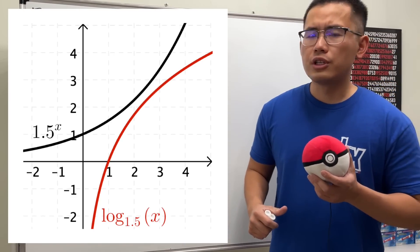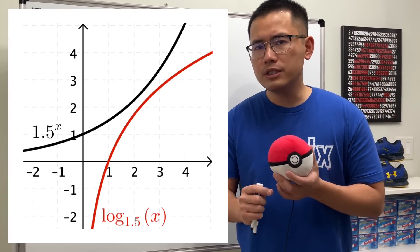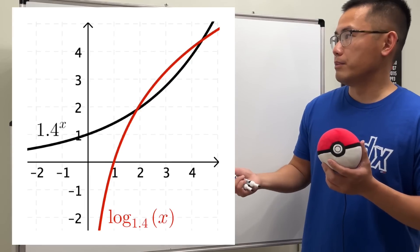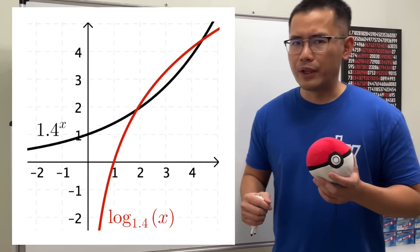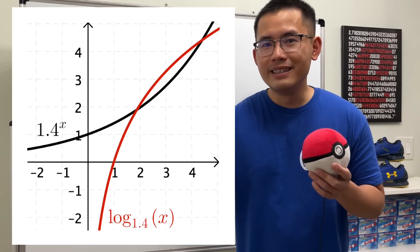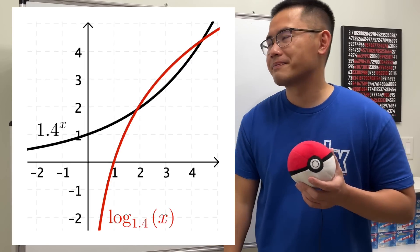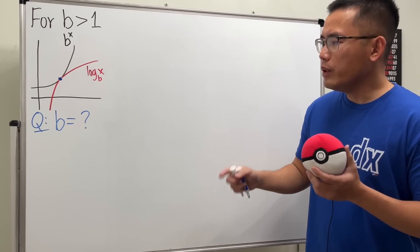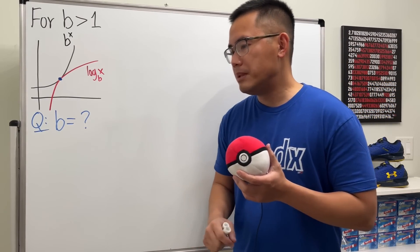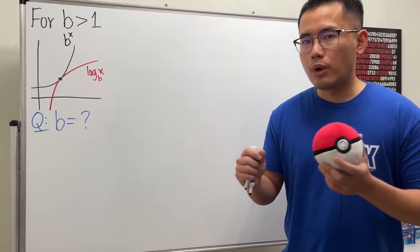They still don't touch but we can see they're getting closer, so let's try 1.4. Okay, they do touch but this time they touch at two points. We don't want that, we just want one point. So now we can see the b value must be between 1.4 and 1.5.